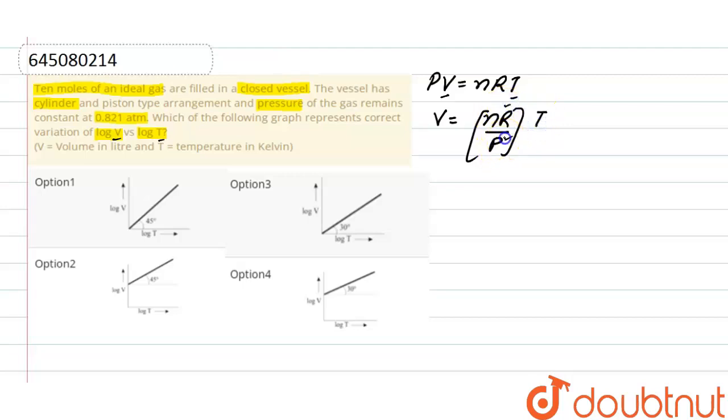Taking log on both sides, log V equals log of nR divided by P plus log T. On the y-axis we have log V. According to the equation of a graph, y equals c plus mx.